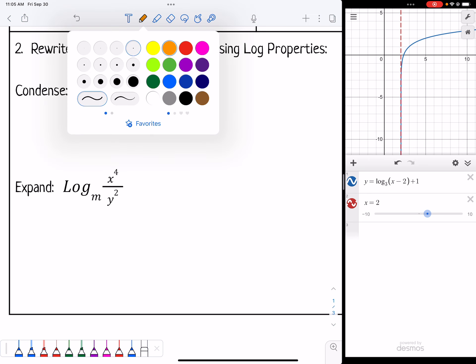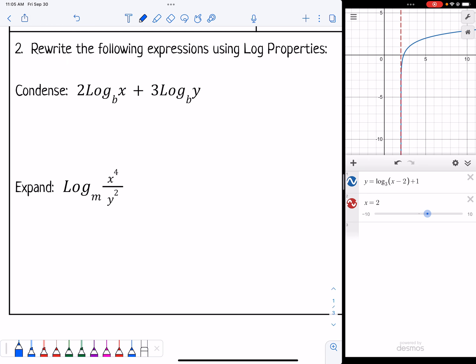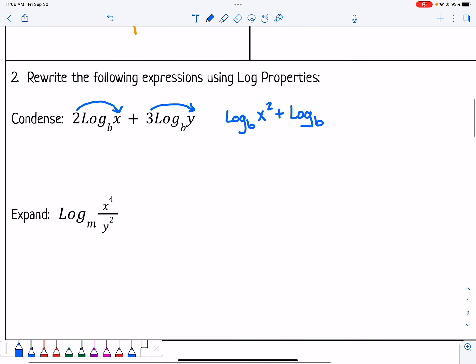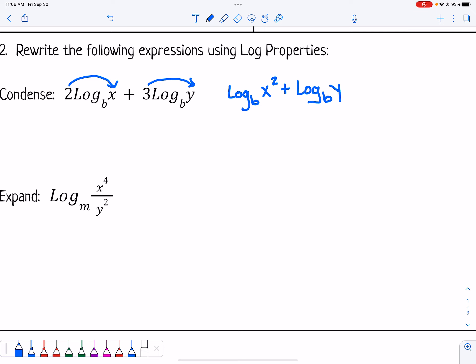Let's look at number 2. We want to rewrite the following expressions using log properties. In the first one, we want to condense the log expression. The first thing to do is move the coefficients to become powers. So we write log base b of x squared plus log base b of y cubed. They are adding together, so that means I need to multiply for my next step. So log base b of x squared times y cubed.